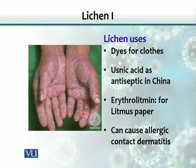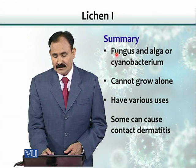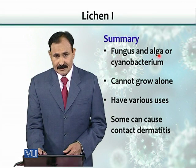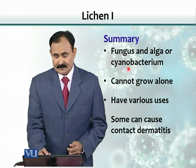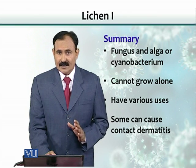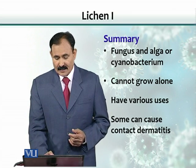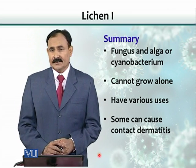As you can see here, this person who got in contact with one of the products produced by lichens is exhibiting contact dermatitis, which is a kind of inflammation. In summary, lichens are a combination of a fungus and alga or cyanobacterium. If separated, they cannot grow alone, and they have various uses — though some can even cause contact dermatitis or diseases.